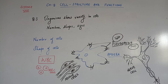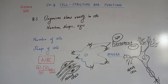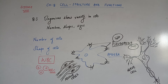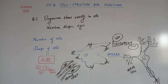The nerve cell receives and transfers messages, thereby helping to control and coordinate the working of different parts of the body. So if a question asks what controls and coordinates all the activities in the body, the answer is nerve cells.